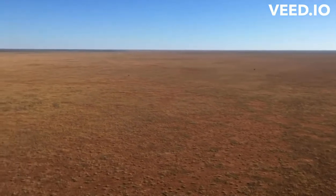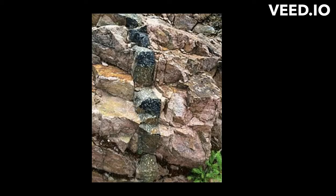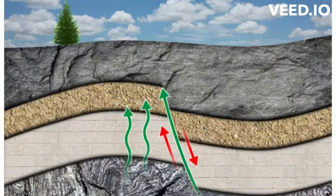Therefore, geophysical data can be used indirectly to map some geological features in detail, including contacts between rocks, faults, shear zones, folds, alteration zones, and other structures.